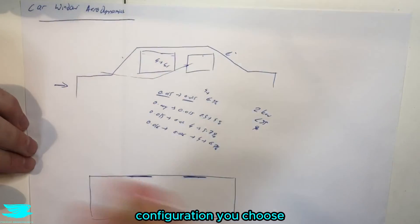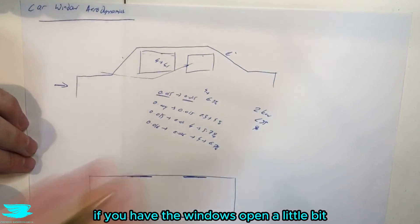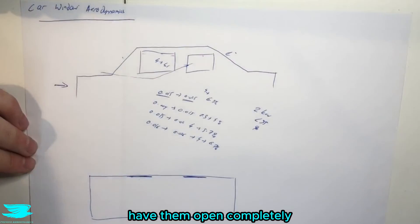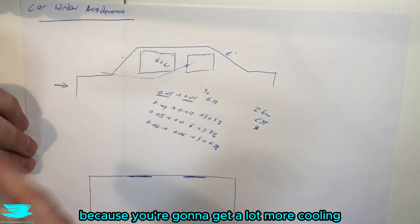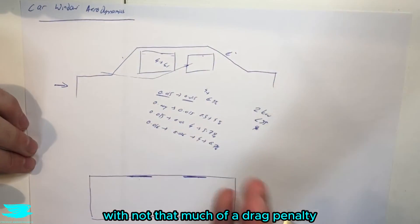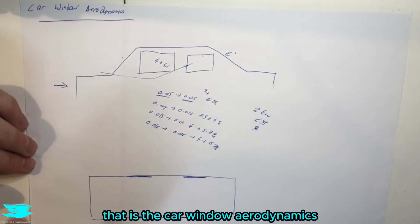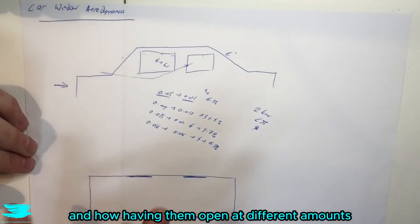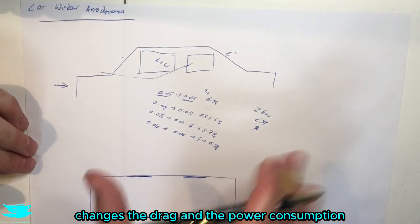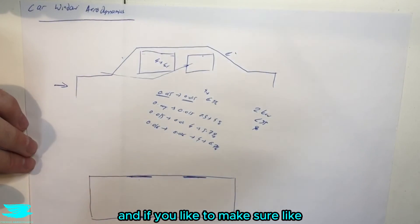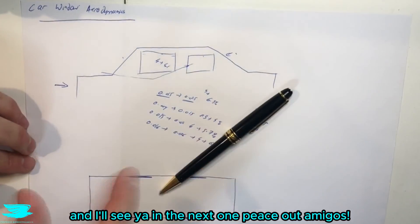And also, regardless of which configuration you choose, if you have the windows open a little bit, have them open completely, because you're going to get a lot more cooling with not that much of a drag penalty. So that is the car window aerodynamics, and how having them open at different amounts changes the drag and the power consumption. And if you like this video, make sure to like the subscribe button, and I'll see this one. Peace, guys.